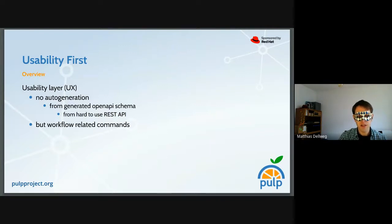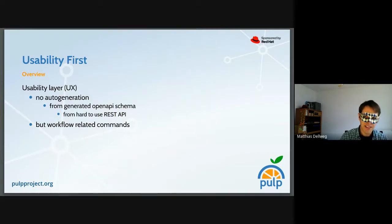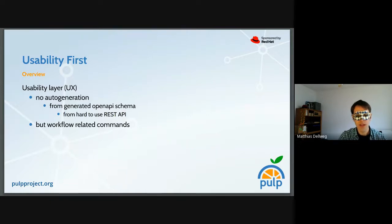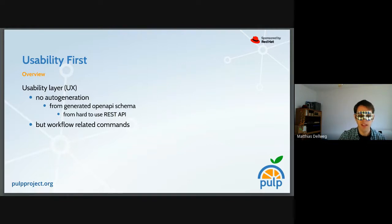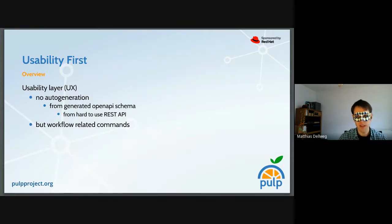The CLI should be a usability layer because we already have the functional layer that is the REST API, but it's quite unusable. The CLI should add value, and that is usability for end users. To me, that means there is no way we can auto-generate anything from a generated OpenAPI schema that is already generated from a hard-to-use REST API, because in every step from there, it gets more complicated.